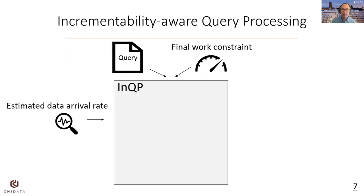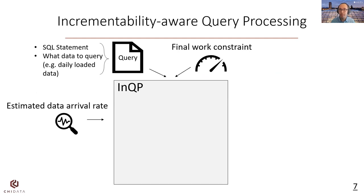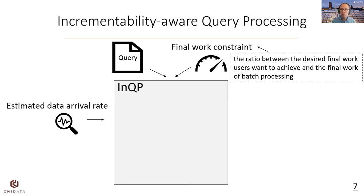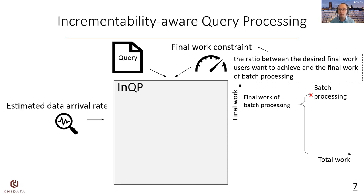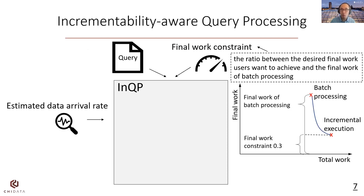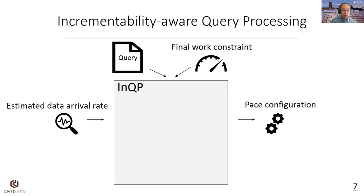NQP takes a query and final work constraint as input from users. The query specifies a SQL statement and what data to query, such as daily loaded data. The final work constraint is the ratio between the desired final work users want to achieve and the final work of batch processing. For example, if users want to reduce the query latency or final work to 30% of batch processing, they will set this constraint to 0.3. NQP further includes the information about the estimated data arrival rate and generates the pace configuration to reduce the total work.